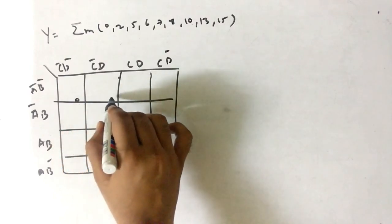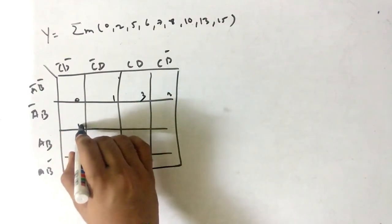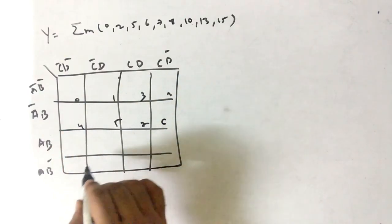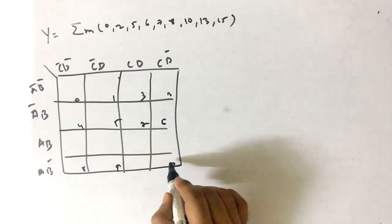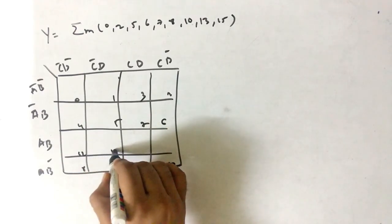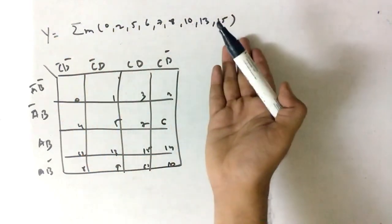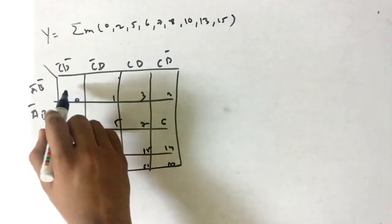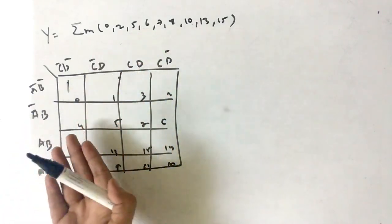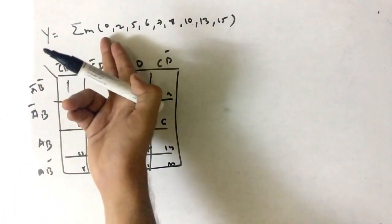Now these decimals are 0, 1, 2, 3, then we have 4, 5, 6, 7, then here we have 8, 9, 10, 11, then we have 12, 13, 14, 15. These min terms means that the output is high for these decimals.